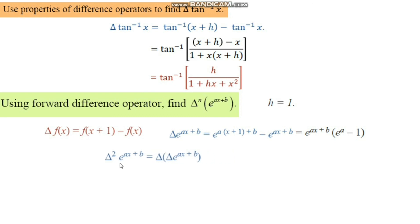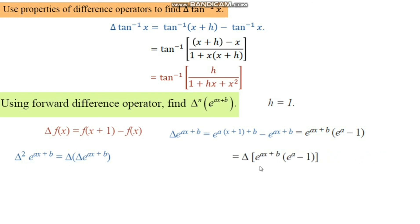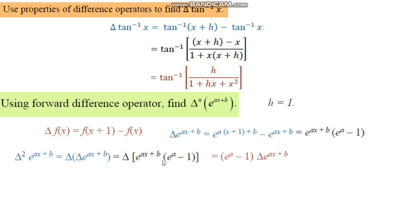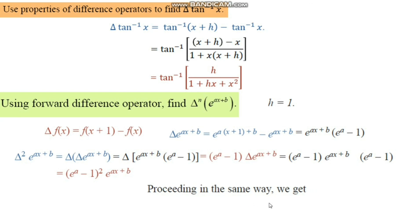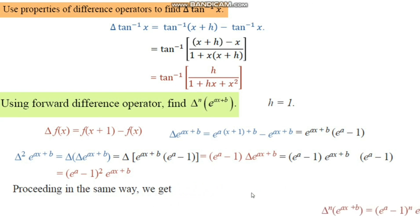With h = 1, Δf(x) = f(x+1) minus f(x). For f(x) = e^(ax+b), the first difference is e^(a(x+1)+b) minus e^(ax+b) = e^(ax+b)·(e^a minus 1). For the second difference, Δ²(e^(ax+b)) = (e^a minus 1)²·e^(ax+b). Proceeding this way, we obtain Δⁿ(e^(ax+b)) = (e^a minus 1)ⁿ · e^(ax+b).